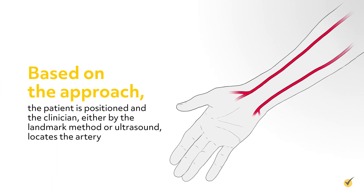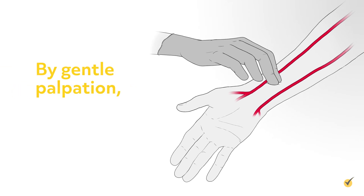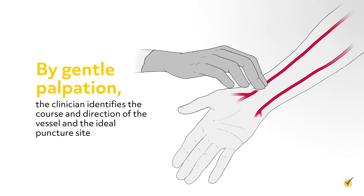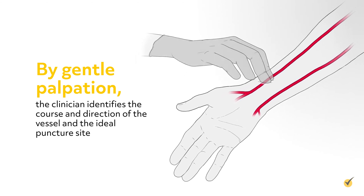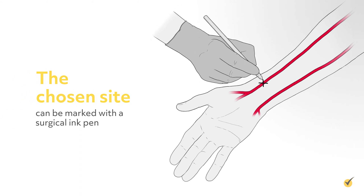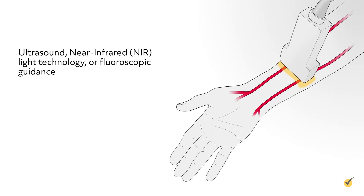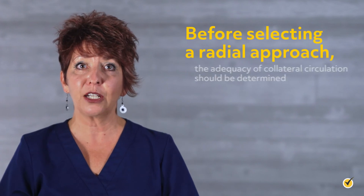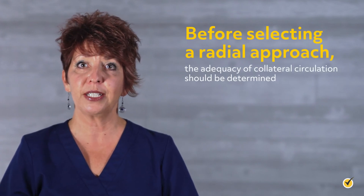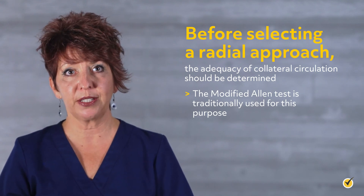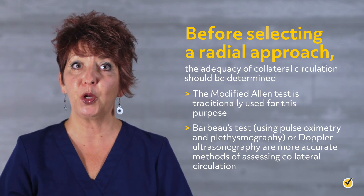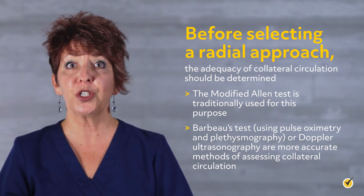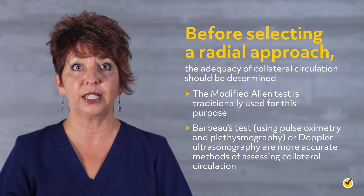Based on the approach, the patient is positioned and the clinician, either by the landmark method or ultrasound, locates the artery. By gentle palpation, the clinician identifies the course and direction of the vessel and the ideal puncture site. The chosen site can be marked with a surgical ink pen. Ultrasound, near-infrared light technology, or fluoroscopic guidance aids vascular visualization and improves puncture site accuracy. Before selecting a radial approach, the adequacy of collateral circulation should be determined. The modified Allen test is traditionally used for this purpose. However, Barbo's test using pulse oximetry and plethysmography, or Doppler ultrasonography, are more accurate methods of assessing collateral circulation.